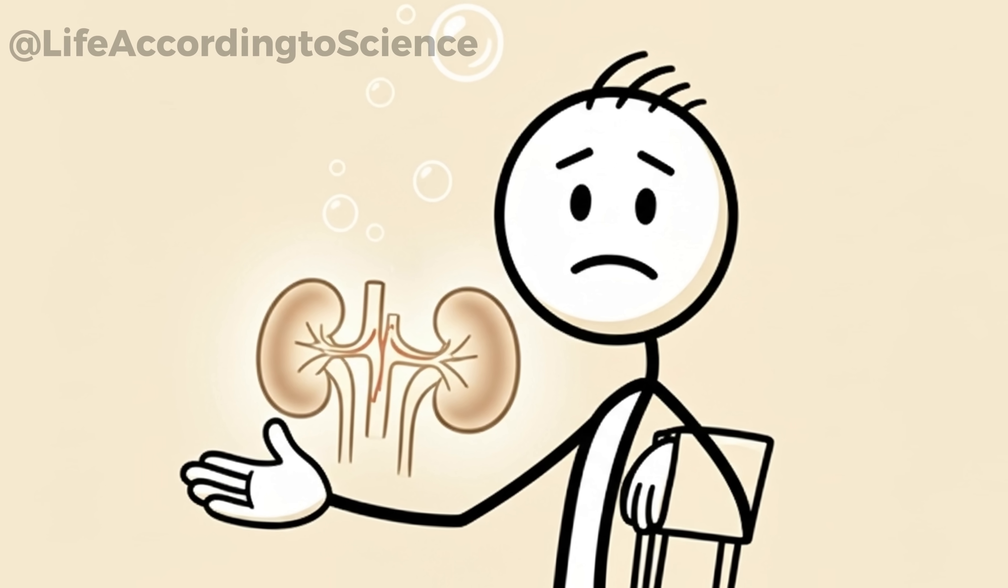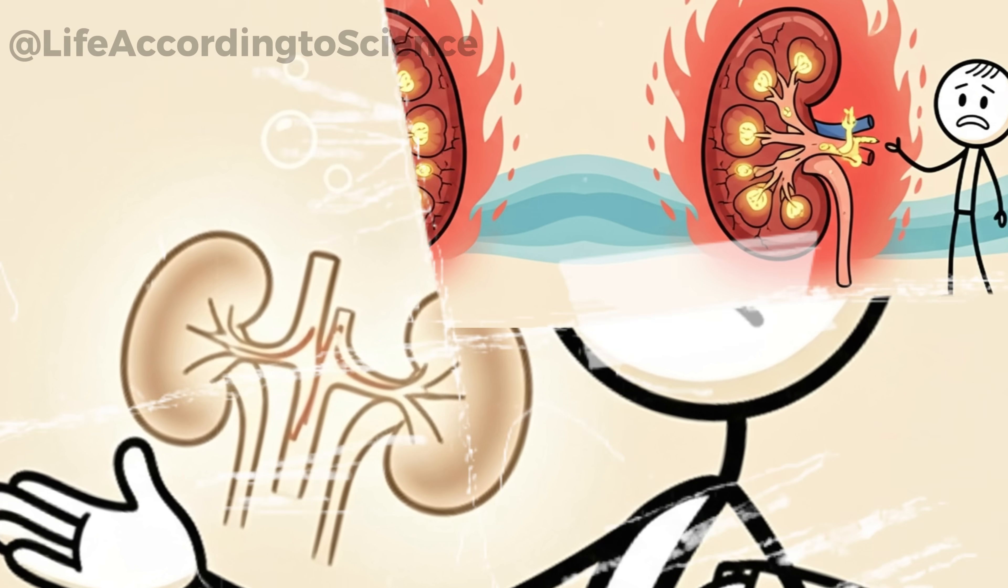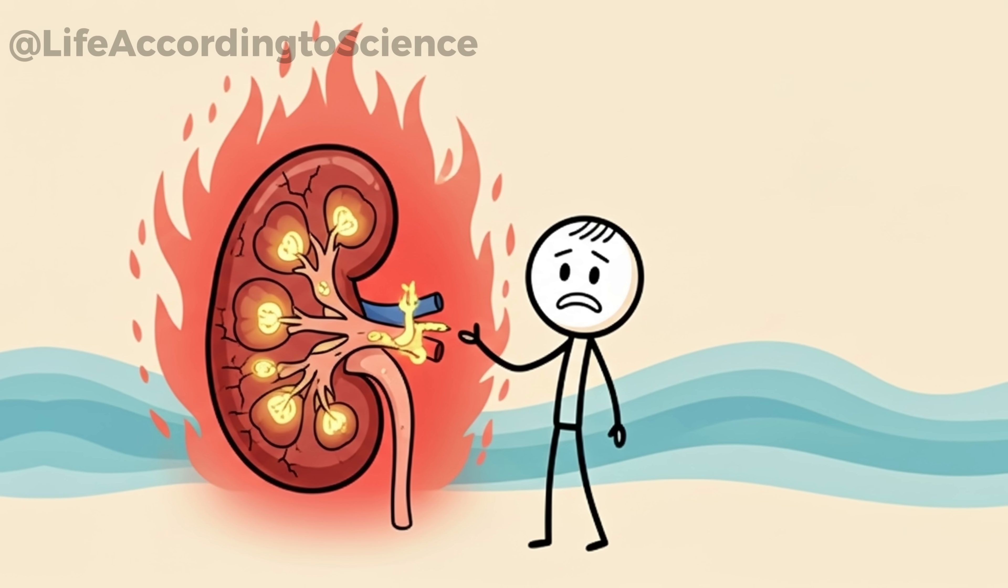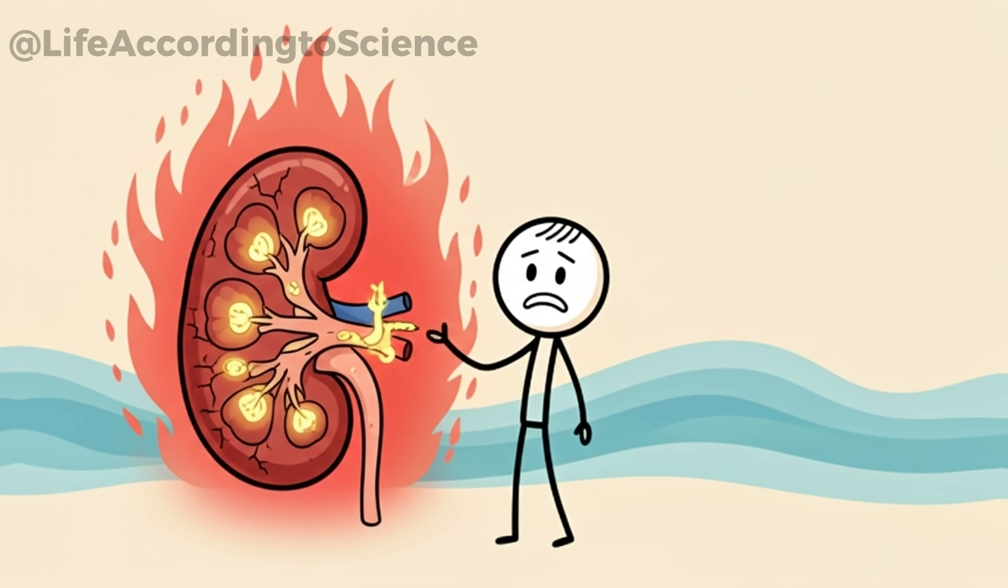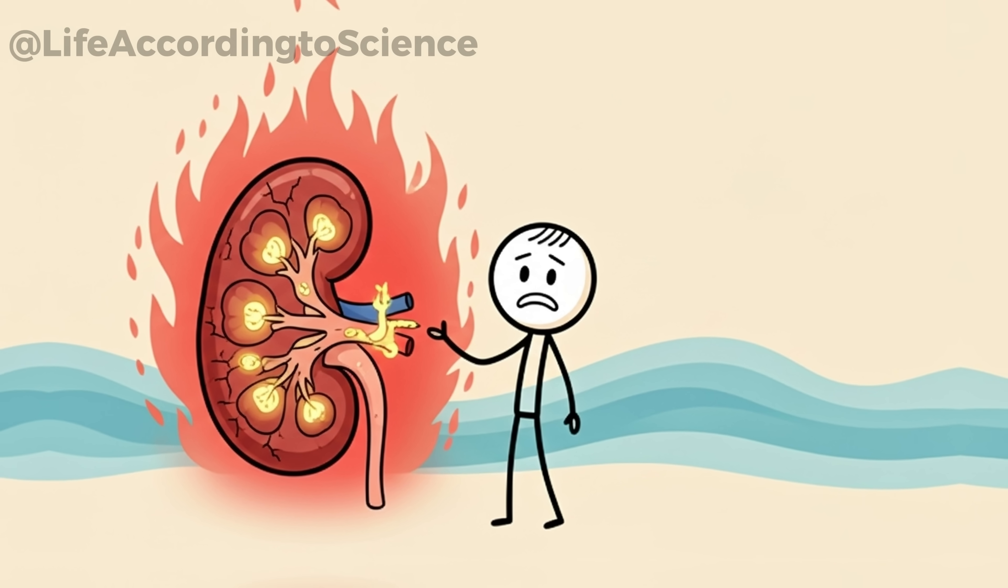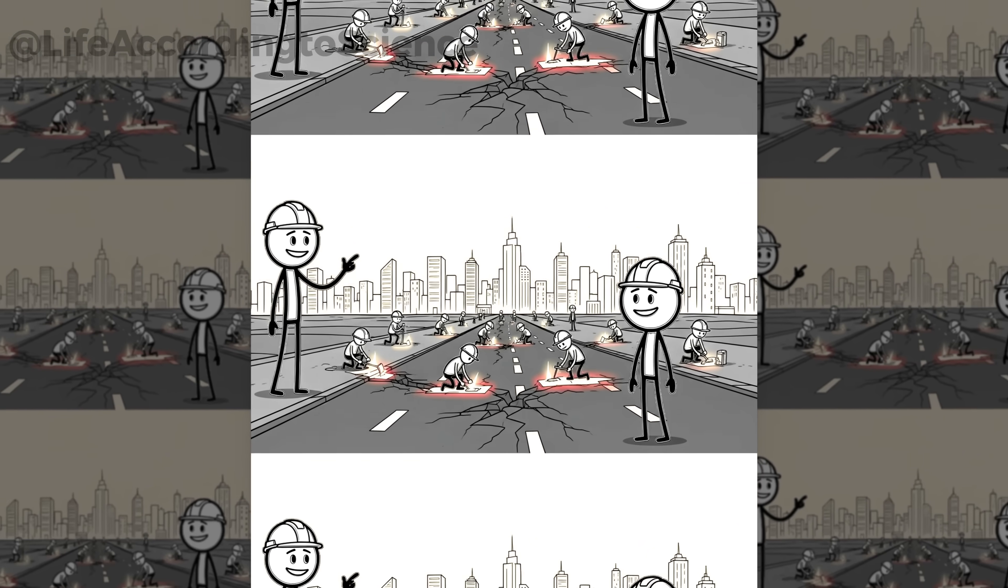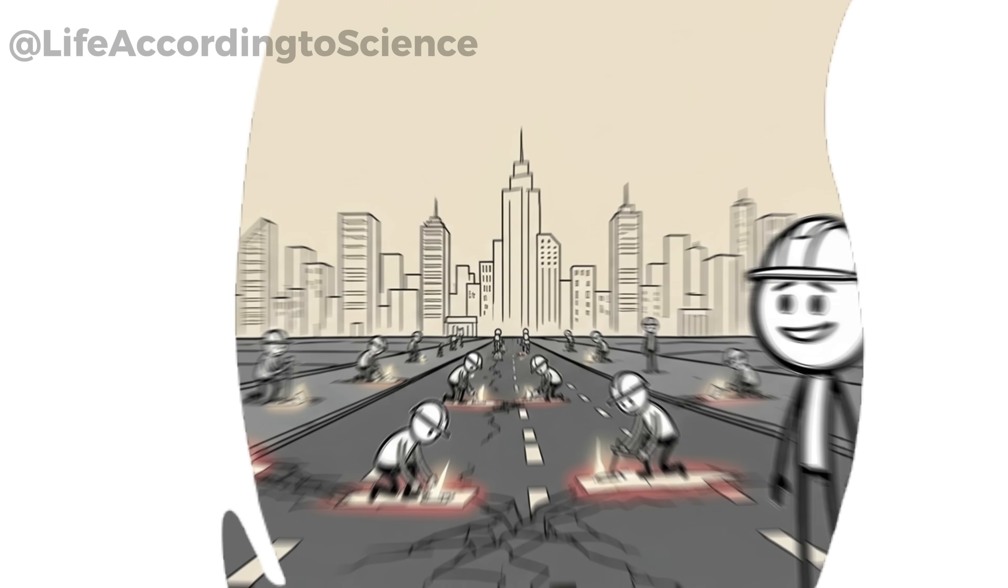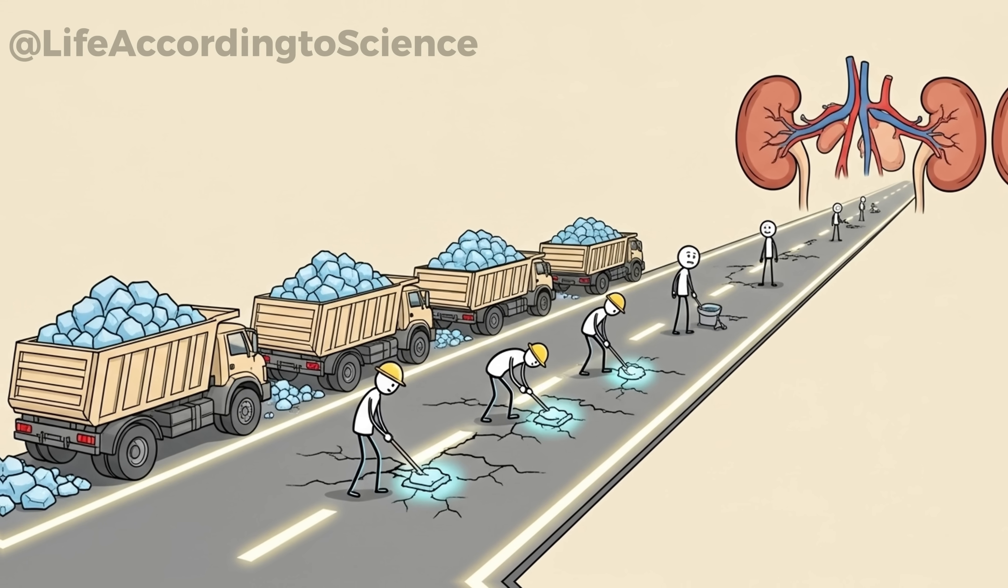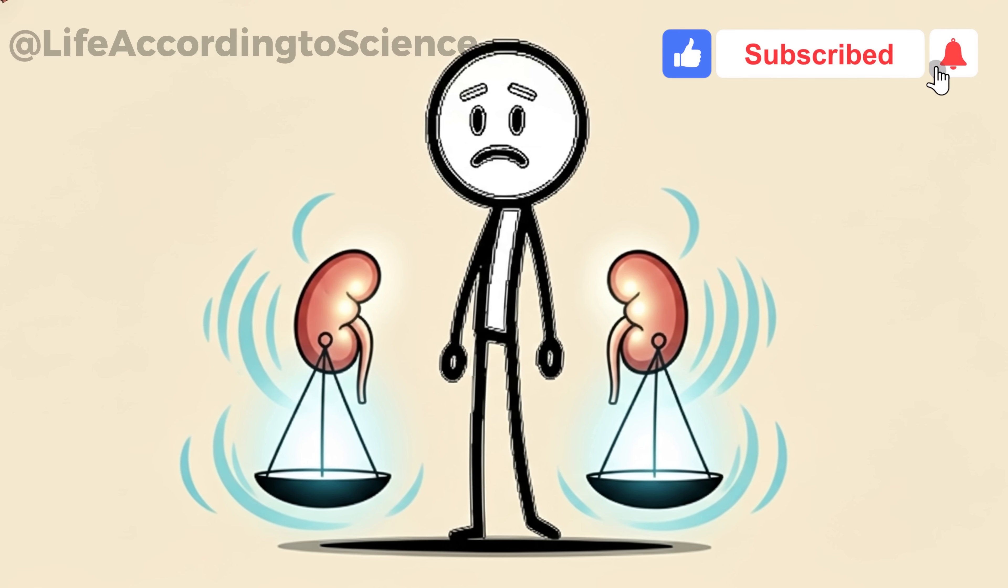When sugar leaves your diet, your kidneys start something remarkable – self-repair. These organs have a limited ability to regenerate, and studies suggest that reduced sugar intake lowers inflammation, allowing nephrons (the kidneys' tiny filters) to recover function. Think of it as a construction crew repairing a city after years of constant traffic damage. When the roads are no longer hammered by overload, workers can finally patch cracks and reinforce weak areas. Your kidneys work in a similar way, taking advantage of the sugar-free break to restore balance.